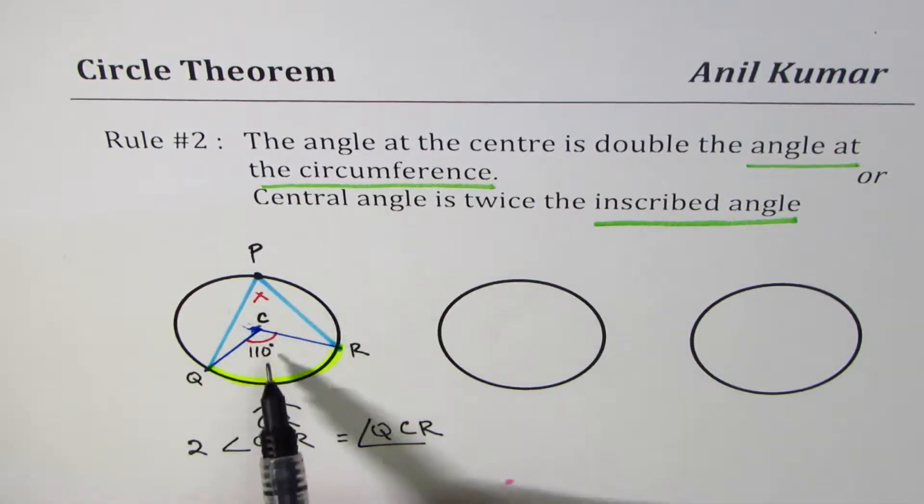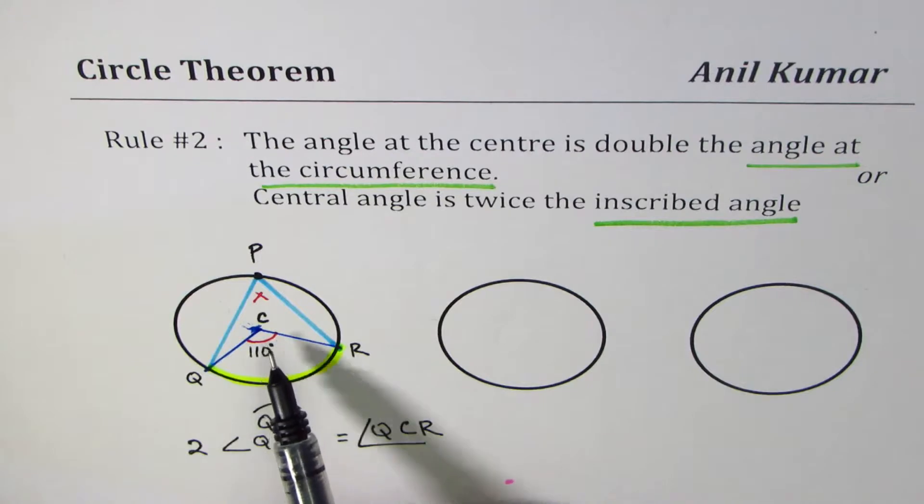Is half of the angle at the center, which is called the central angle. So you could say central angle is twice the inscribed angle. I hope the rule is absolutely clear.